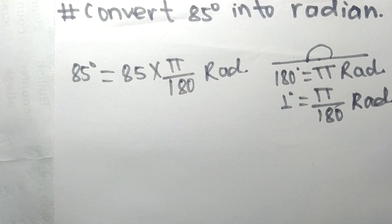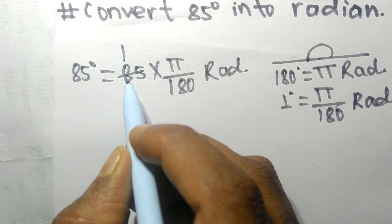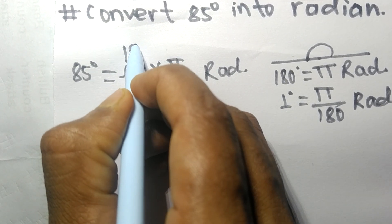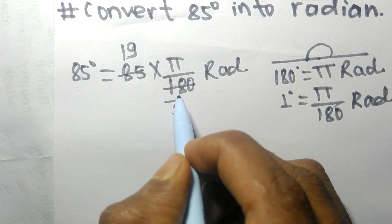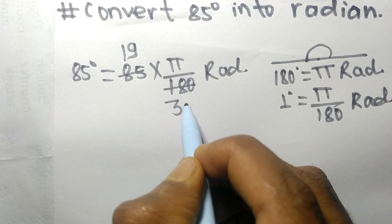Now we cancel the numbers. Working through the division: 5 times 1 is 5... 5 times 9 is 45... 5 times 3 is 15, remainder 3... 5 times 6 is 30. After simplification, we get 19 over 36.